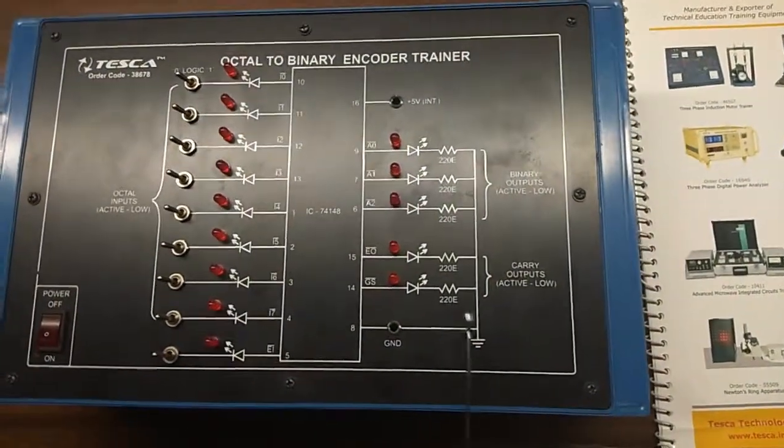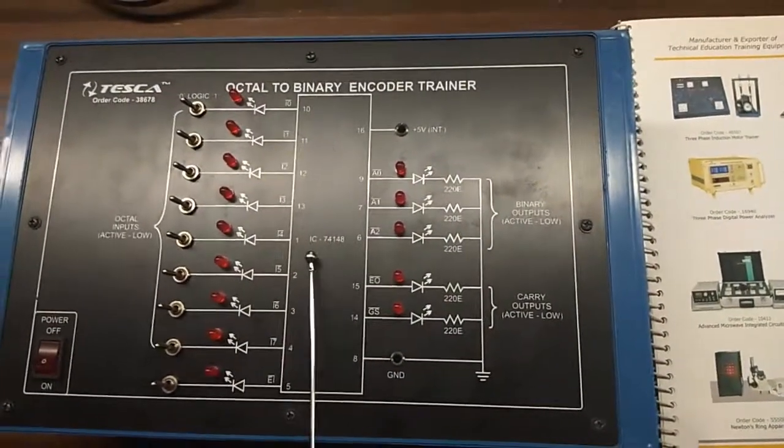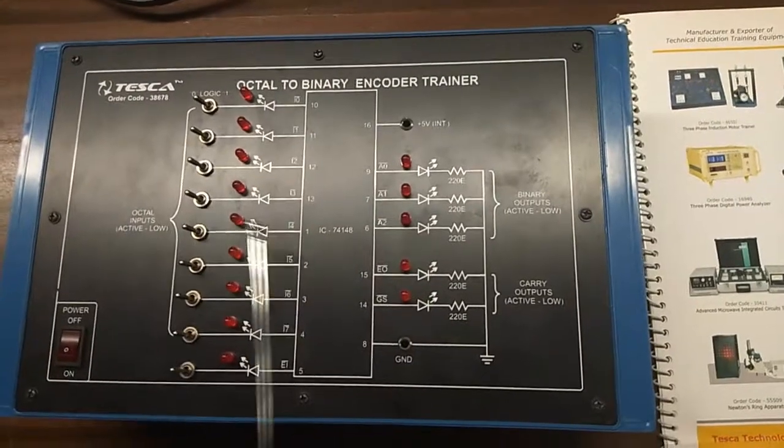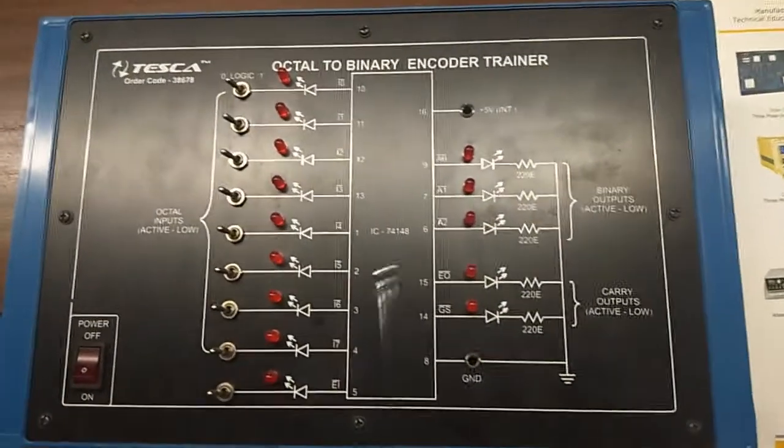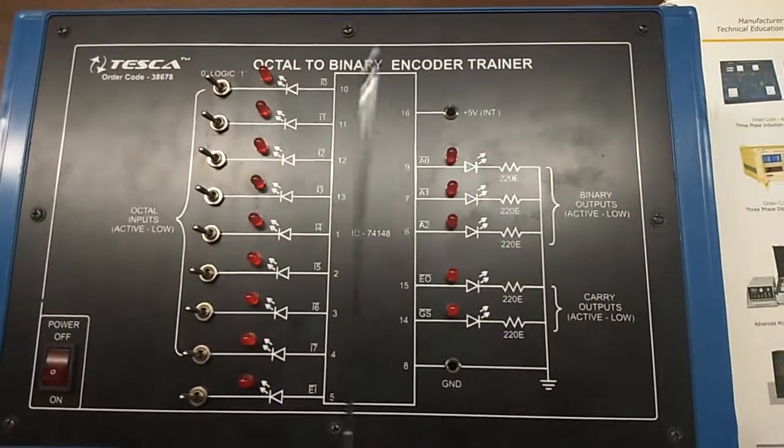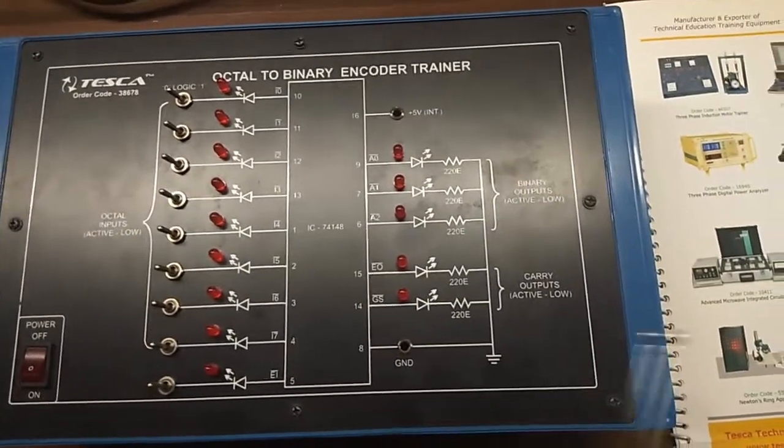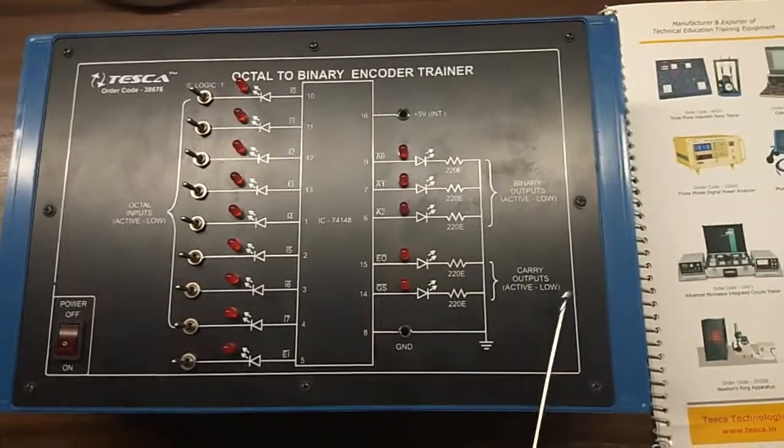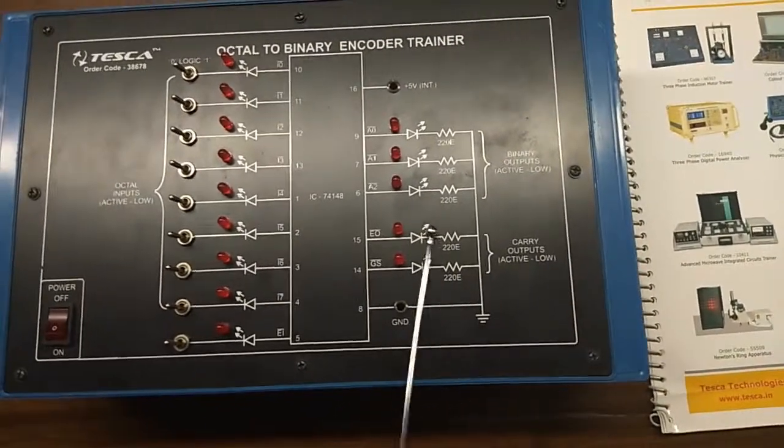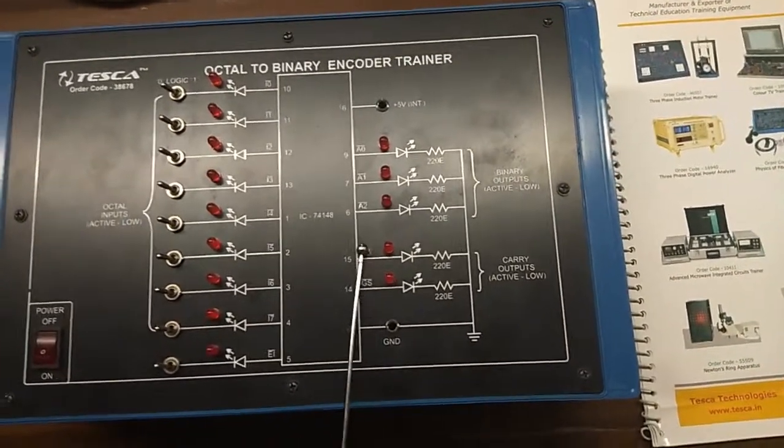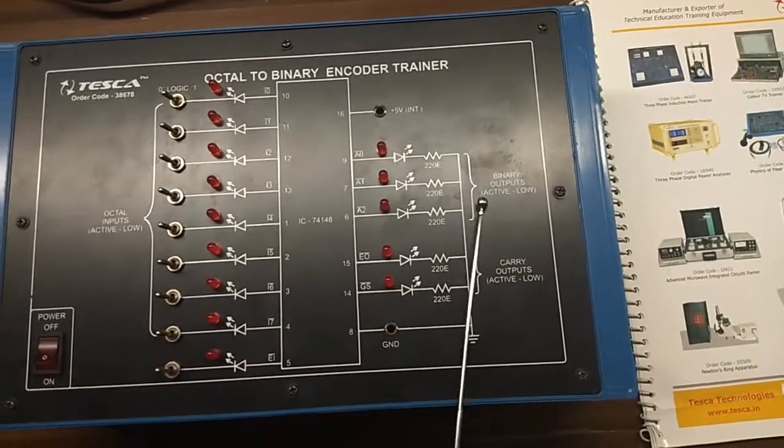This is the trainer kit. This is IC74148 used for this octal to binary encoder. These are the octal inputs and this is binary outputs and these are carry outputs. These two are carry output, this is EO bar and GS bar and these are binary output.